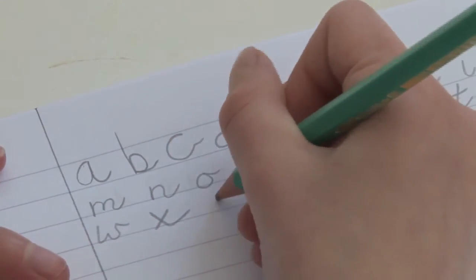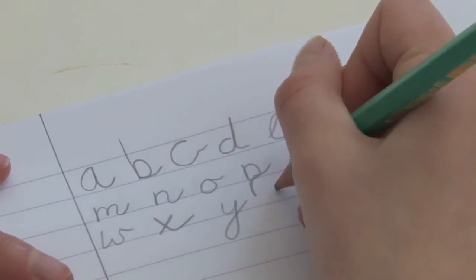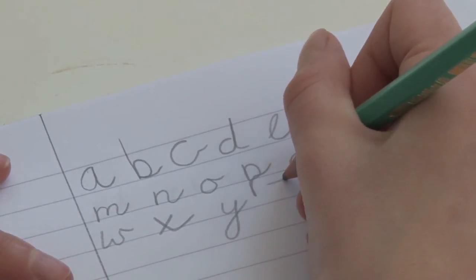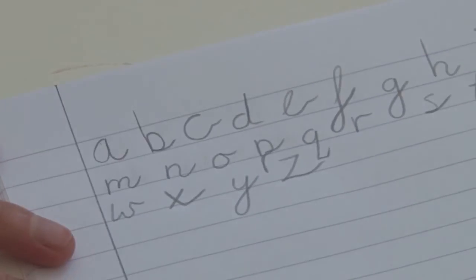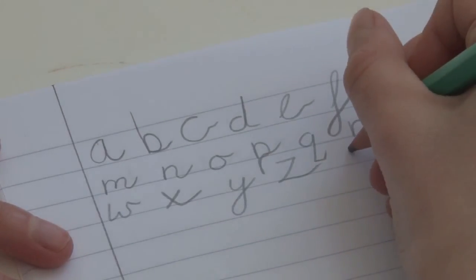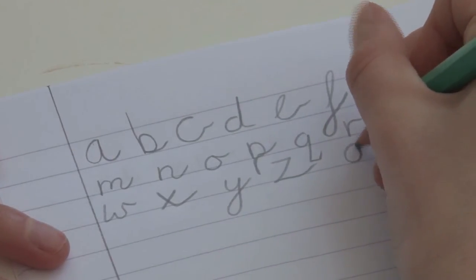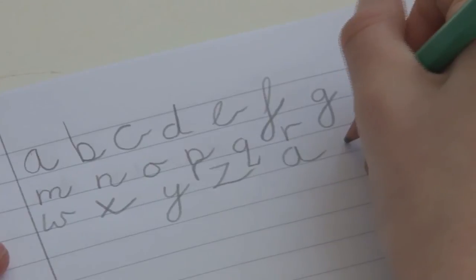Not all joined-up writing involves looping. Some styles do, while other styles have breaks at the loop letters, and this is called part cursive, but it can be just as fast and just as fluent.